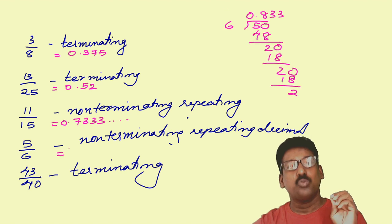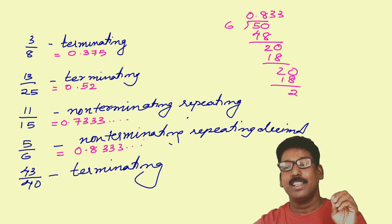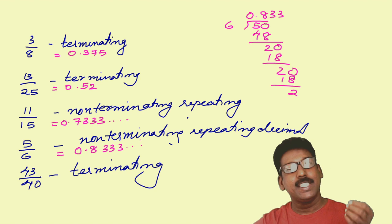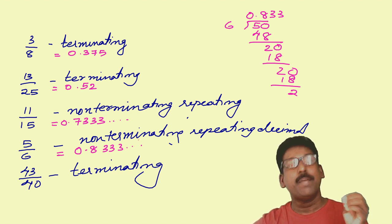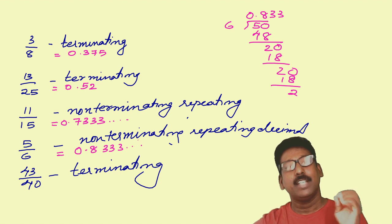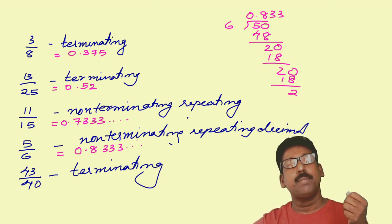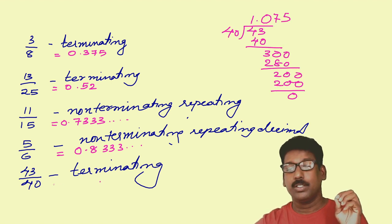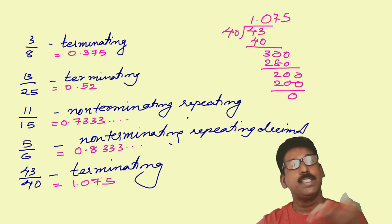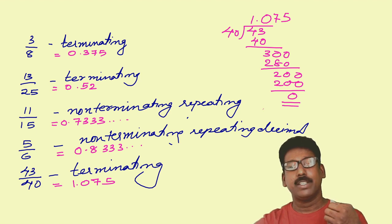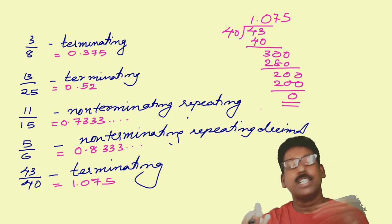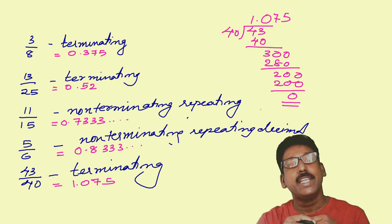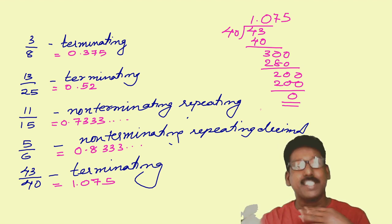5 by 6 — you get it as 0.83333; here also 3 is repeating, so 5 by 6 has non-terminating repeating decimal expansion. 43 by 40 — you get it as 1.075, that means it is terminating; you are getting 0 as the remainder. Now, how did I say without actual calculation whether the given rational number is terminating or non-terminating? Let us check it out.